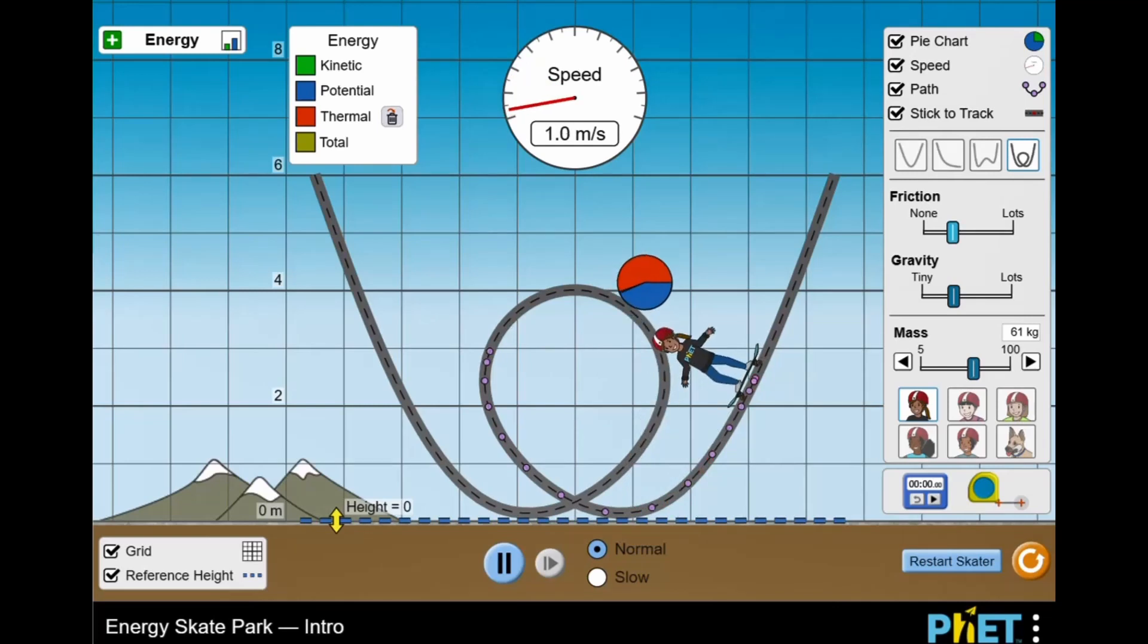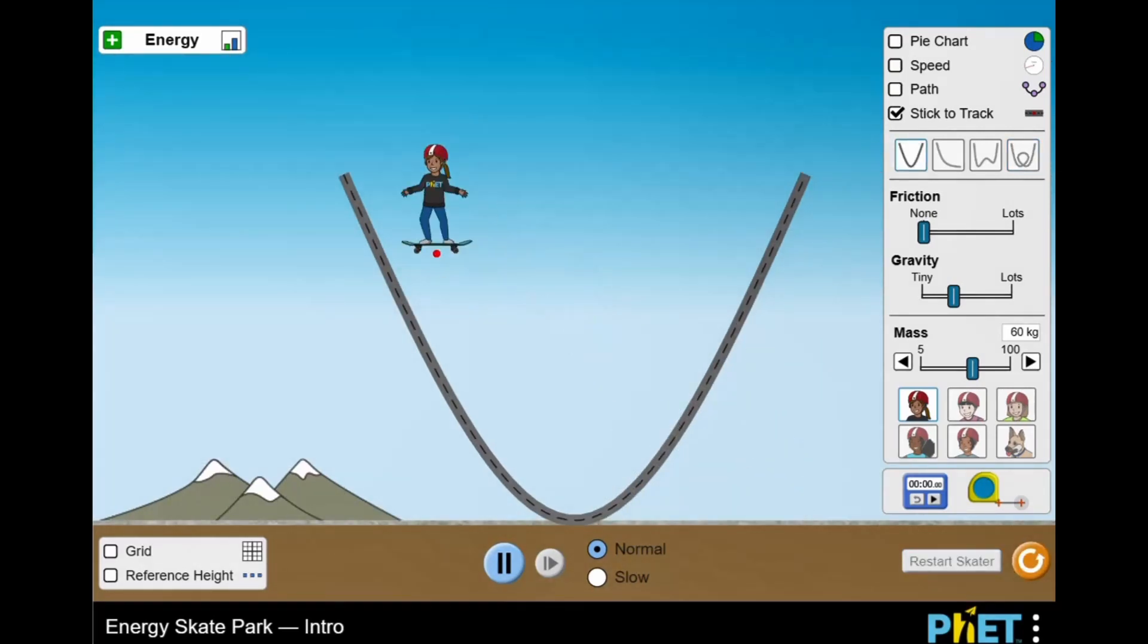You can alter the components to display different scientific information. Click on the different tracks and observe the skater's motion.